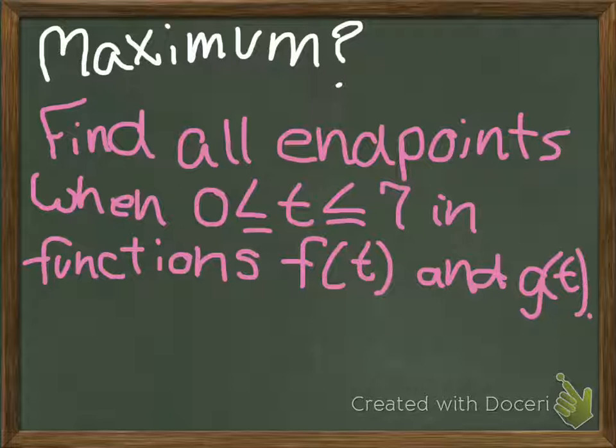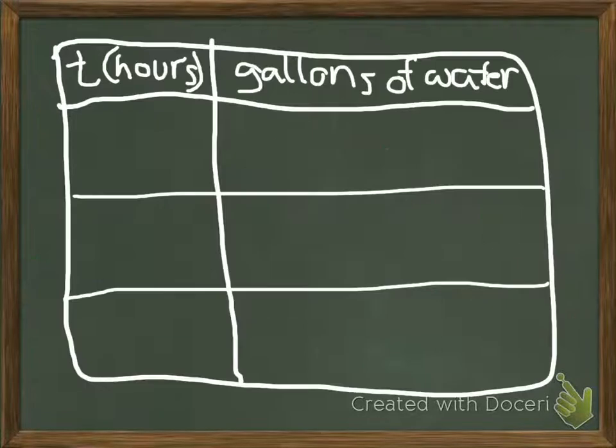You've got to find the maximum by finding all endpoints at 0, 3, and 7 in functions F(t) and G(t). I have this helpful handy dandy graph. 0 is an endpoint and 3 is an endpoint. They mention that at time 0 the amount of water in the tank is 5000 gallons.